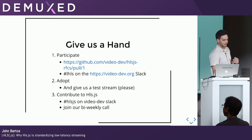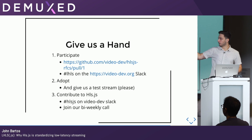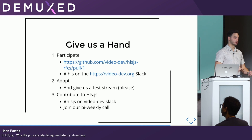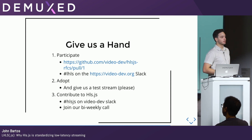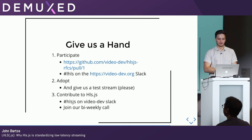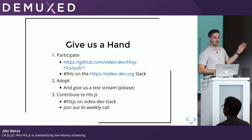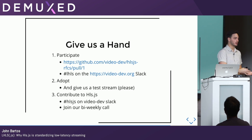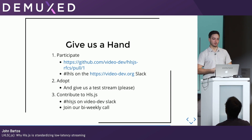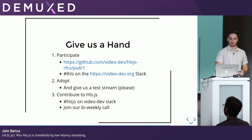Here's how you can actually help. First, participate: go to this pull request and read the proposal and tell me if it sucks or if it's great, or what you want changed. You can also go to the LHLS room on the video dev Slack for more free-form discussion about low latency. Second, adopt — say you'll build this and give us a test stream, because we will be needing those. Third, become a contributor to HLS.js. That 750 million embeds is a lot — it was 500 million the week before — we're scaling incredibly and we do need people to help. To make it easier, we have a bi-weekly call every Tuesday where all the contributors get in, listen to your issues, and help new ones get started. You can also join HLS.js on Slack for more information.